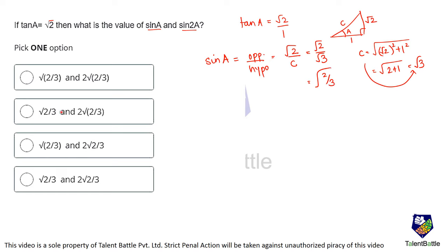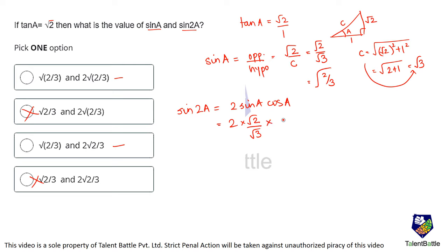So sin a equals root of (2/3). Some options get eliminated, leaving two candidates. Now for sin 2a: sin 2a equals 2 sin a cos a. Sin a is root 2 upon root 3, and cos a equals adjacent upon hypotenuse, which is 1 upon root 3. So sin 2a equals 2 times (root 2 / root 3) times (1 / root 3), giving 2 root 2 divided by 3. The answer is option C.